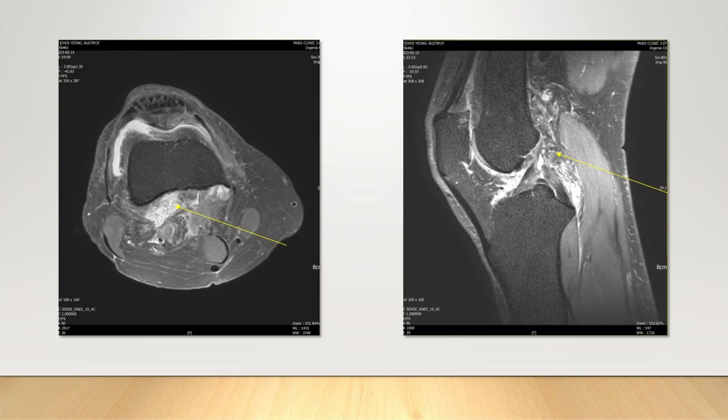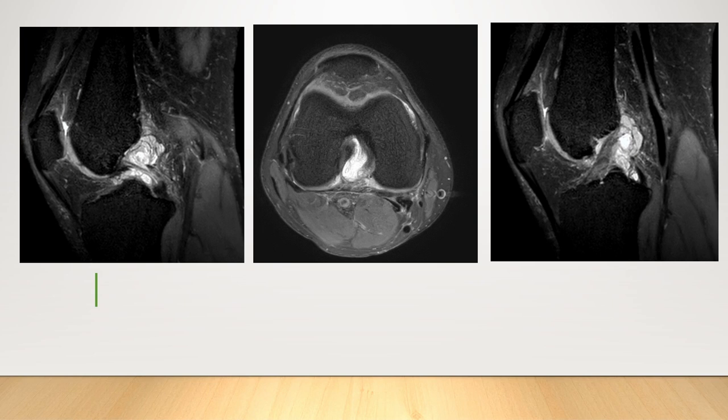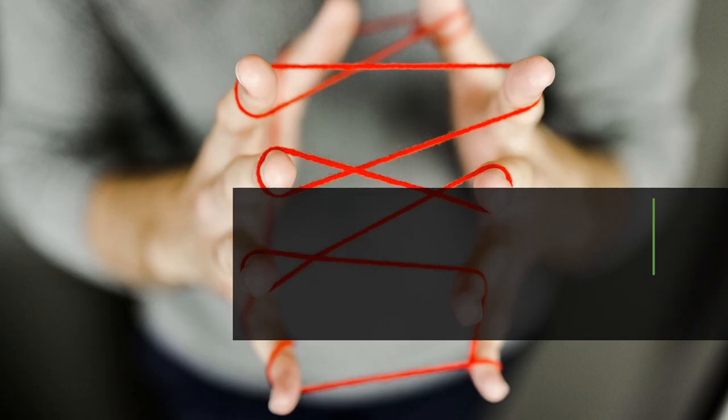It is a case of anterior and posterior cruciate ligament degenerative tears. In addition, there is mucoid degeneration of the anterior cruciate ligament and an intercondylar ganglion cyst. The patient could not bend the knee properly because of severe pain. If you find out each pain generator, how could you control the pain generator, and what are the injection strategies?